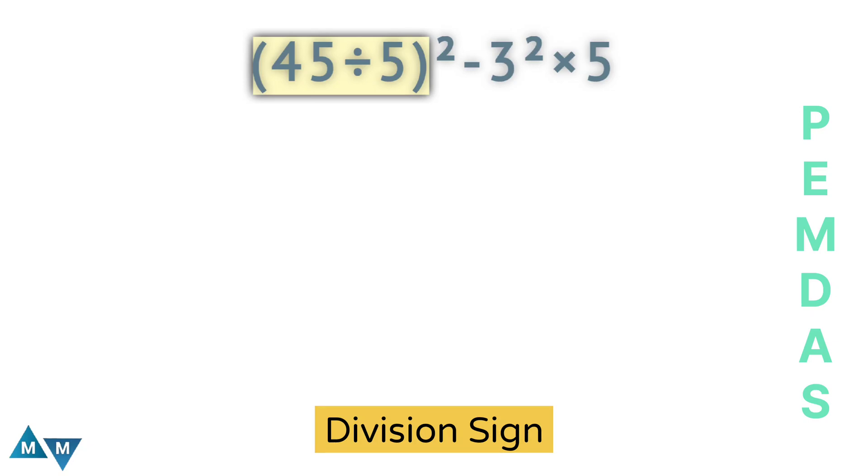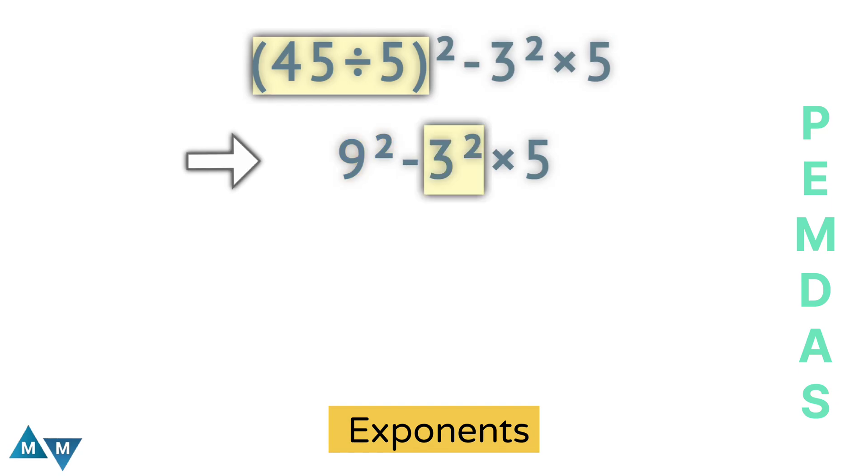Now we have 9 square minus 3 square times 5. Now, following the PEMDAS rule, our next step is to solve the exponents. So 9 square can be written as 81, and 3 square can be written as 9.